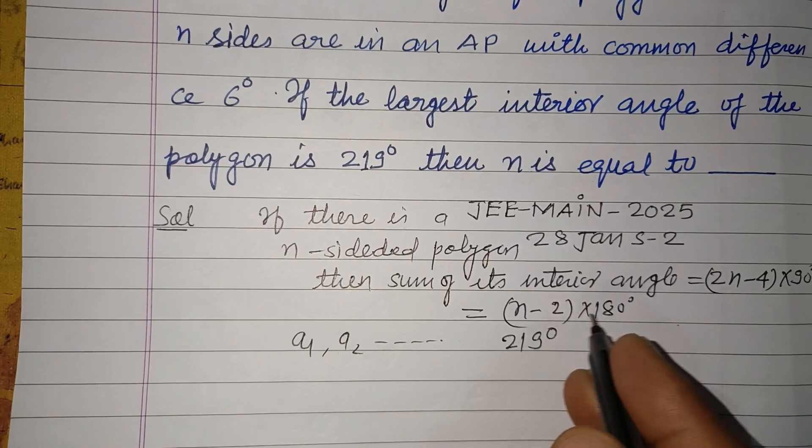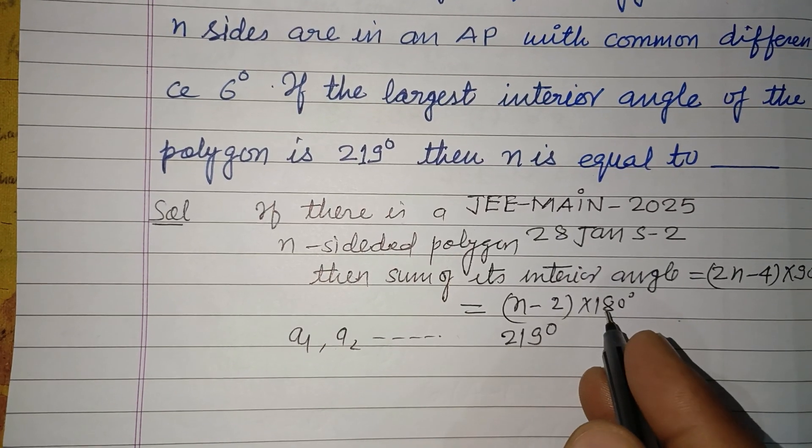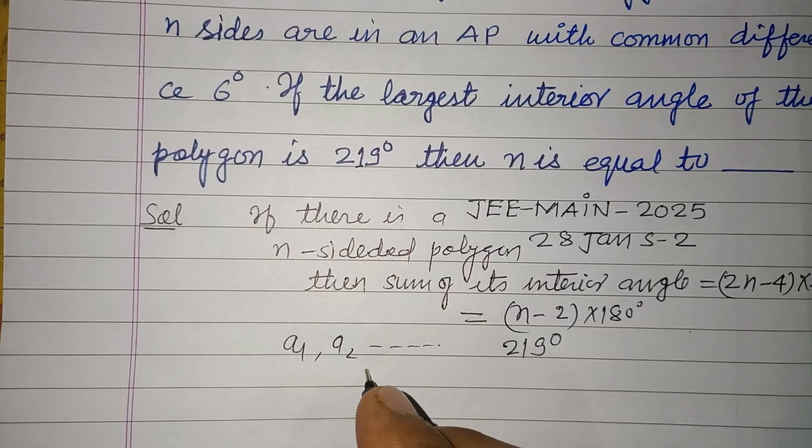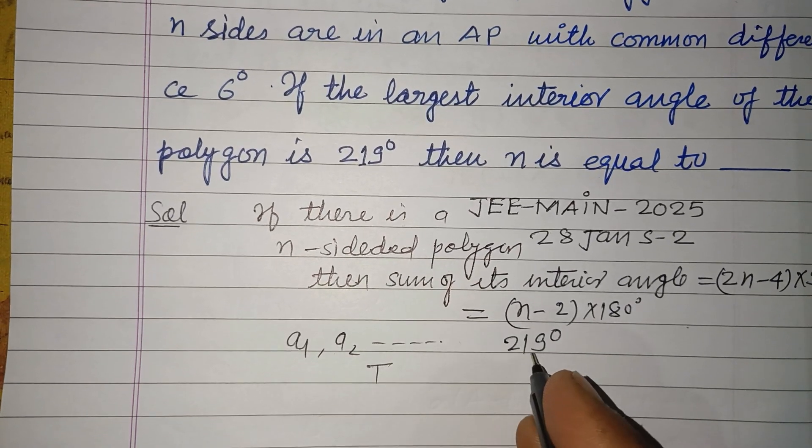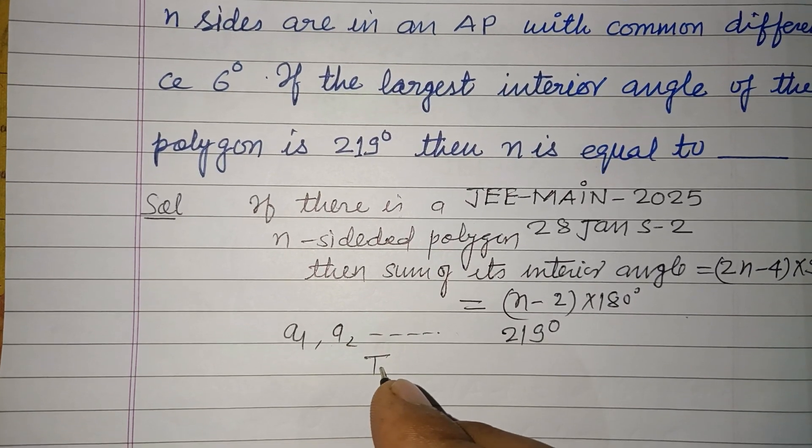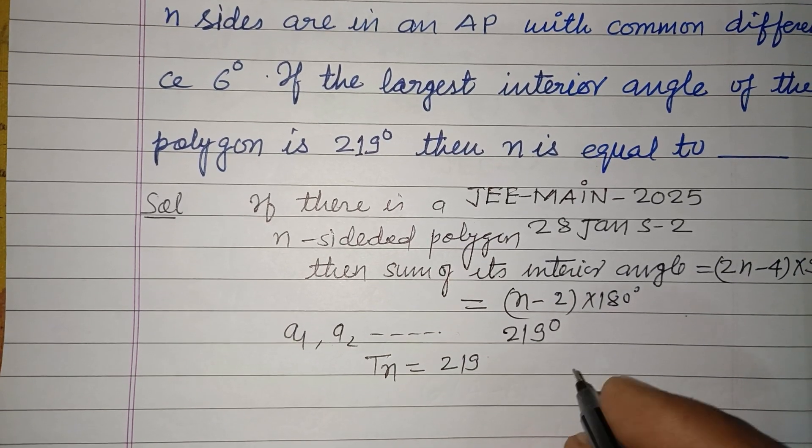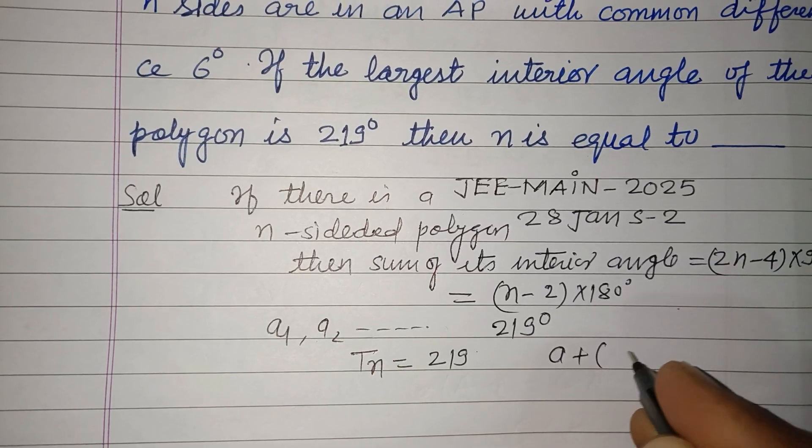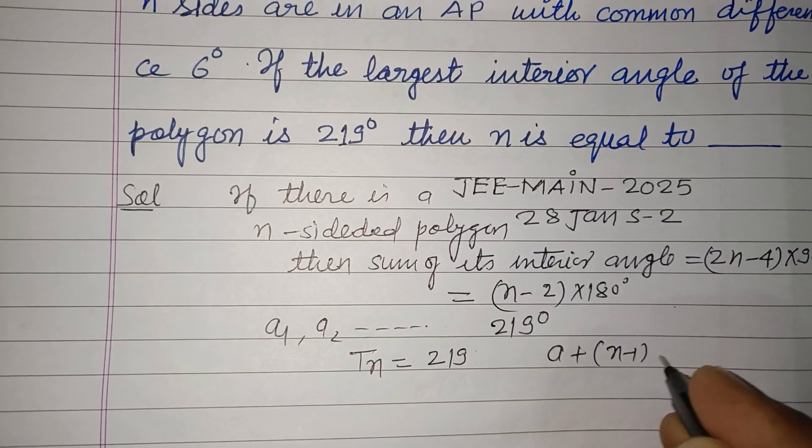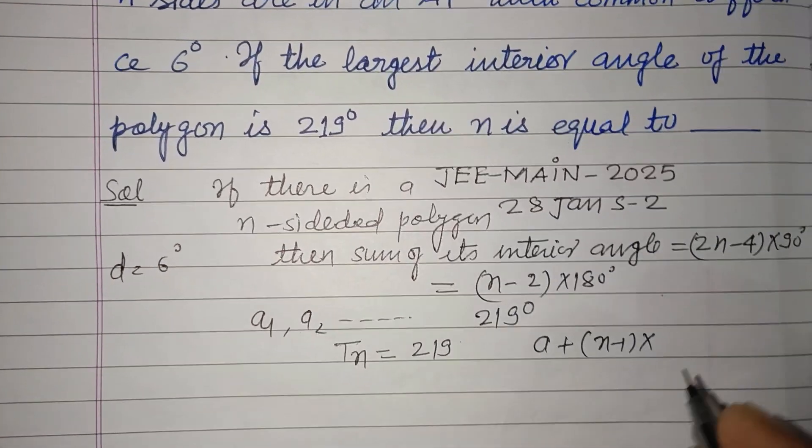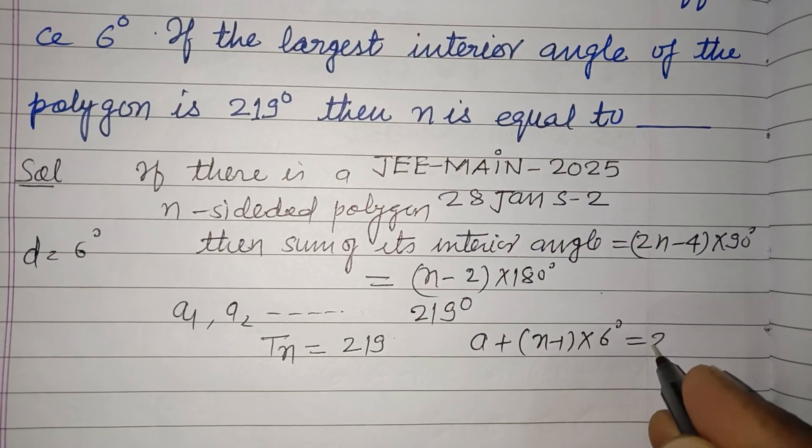So here, the sum is n minus 2 into 180, and the largest angle which is the nth term: Tₙ equals 219. That is a plus n minus 1 into d, where d is the common difference 6 degrees, equals 219.